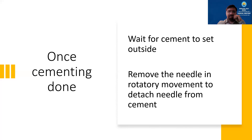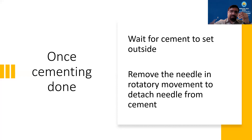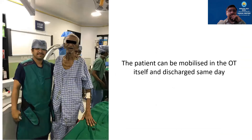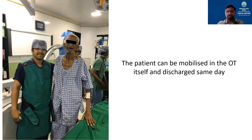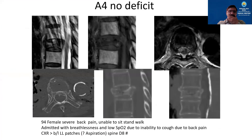Once the cement is in, wait for it to set outside — inside the body it sets much earlier because the body is warmer. Then remove the needle in a gradual rotatory movement so there is no tail of cement that comes out through the pedicle. If the procedure was done under local anesthesia only, you can mobilize the patient right inside the OT — the pain relief is that fast. If sedation was used, the patient can be mobilized after two to three hours.